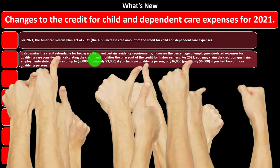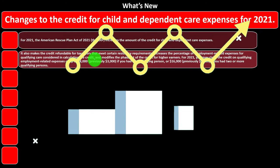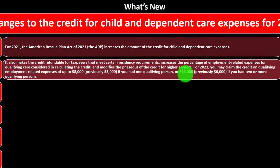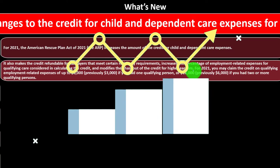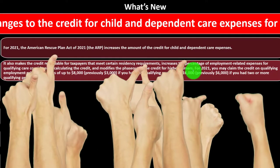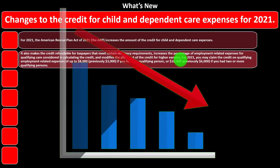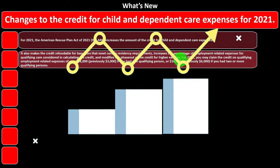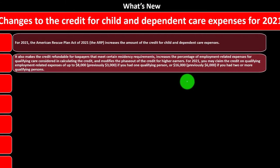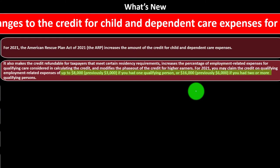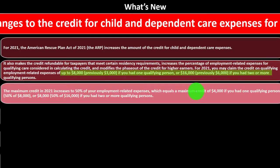The ARP also modifies the phase-out of the credit for higher earners. If the phase-out threshold is increased, that's typically good because the credit will start to decrease as income reaches higher thresholds. For 2021, you may claim the credit on qualifying employment-related expenses up to $8,000 — previously $3,000 — for one qualifying person, or $16,000 — previously $6,000 — for two or more qualifying persons.